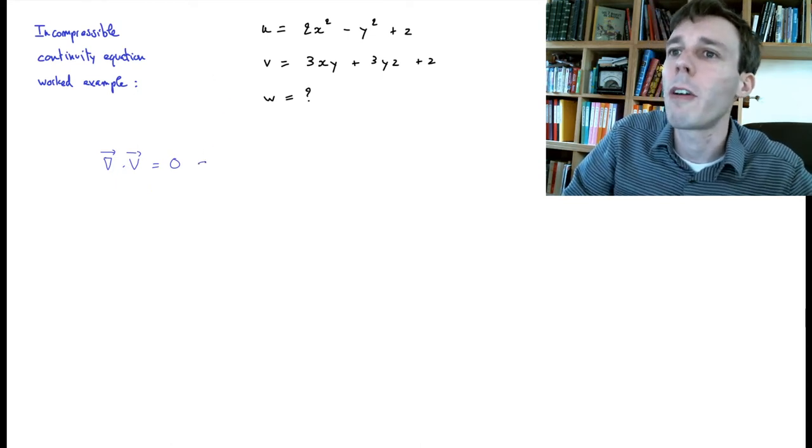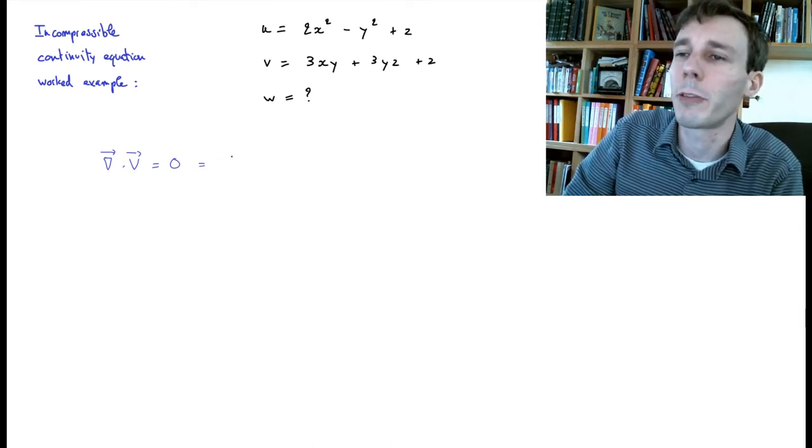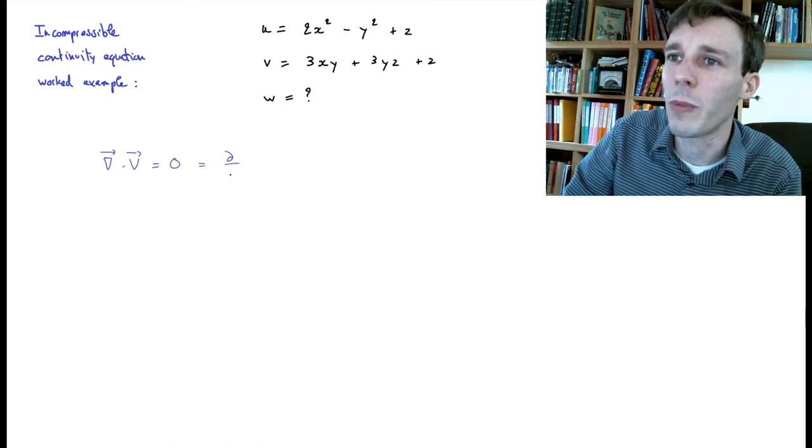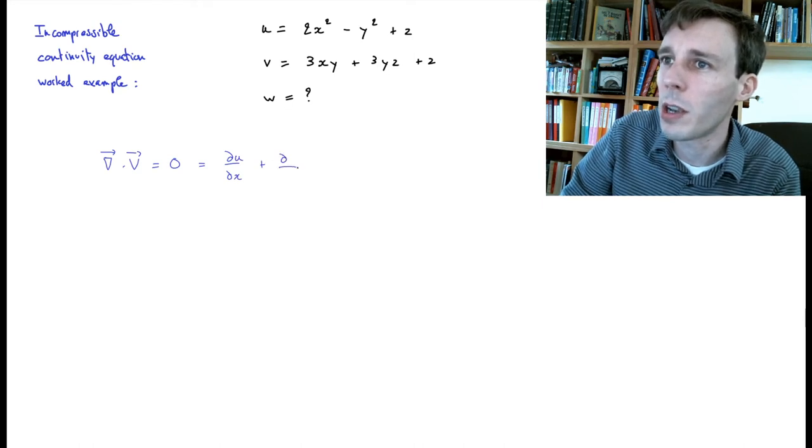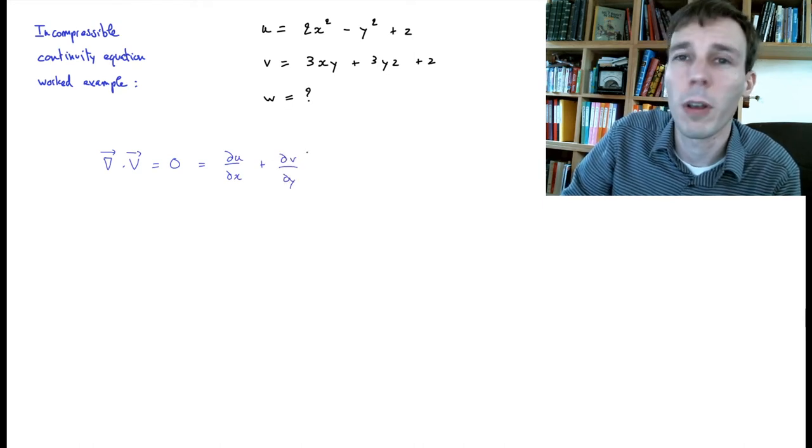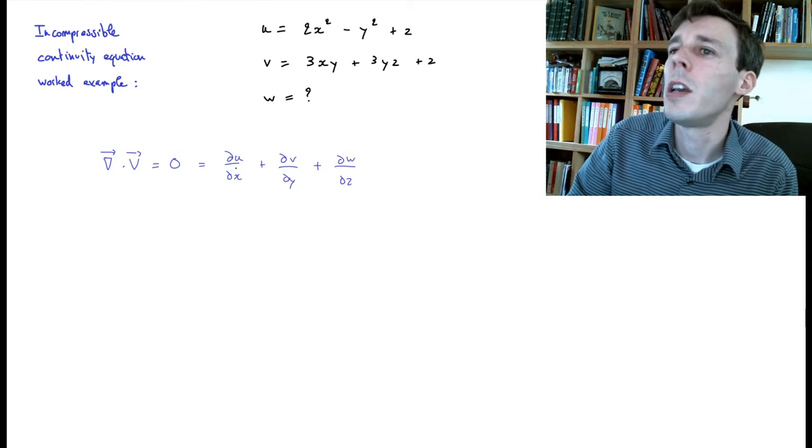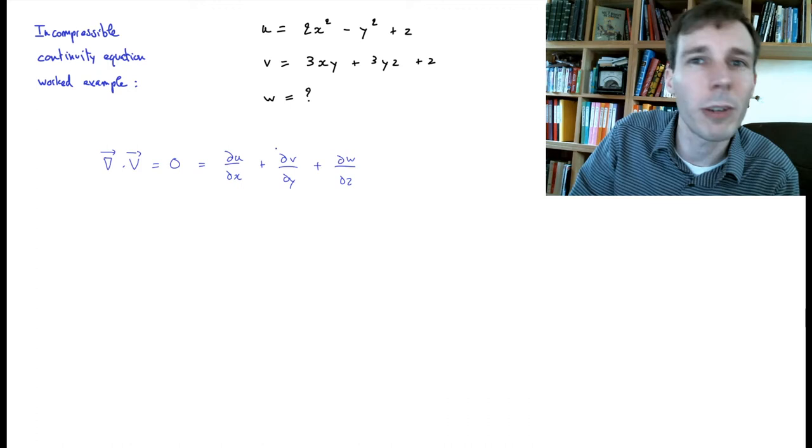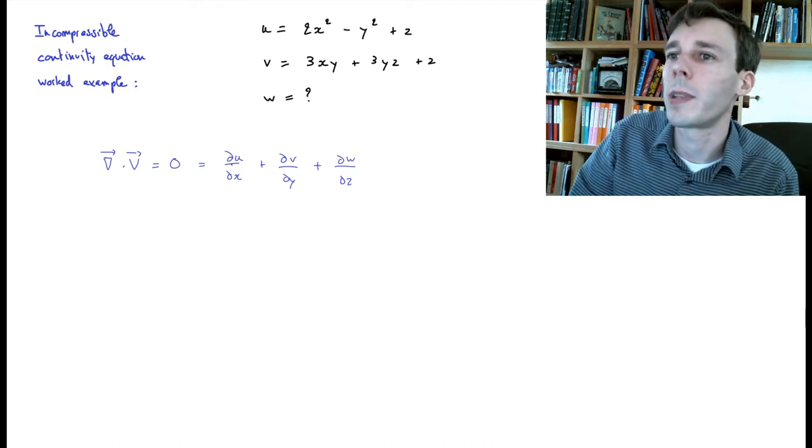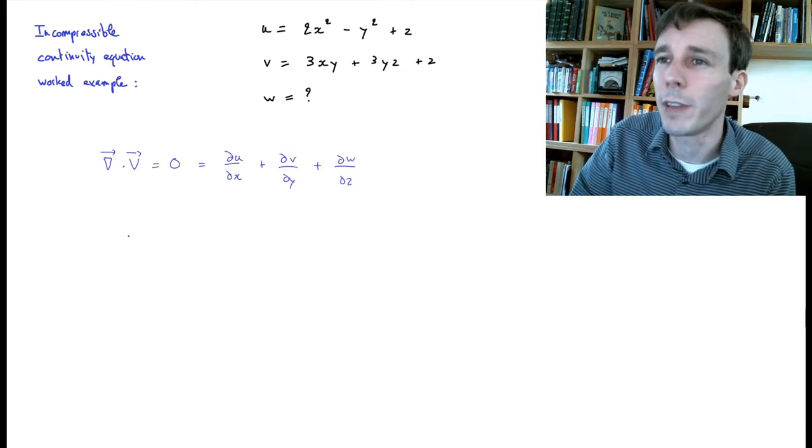Divergence of velocity is a very funky way of writing something that's perhaps more easily understandable if you split it out. This is the change with respect to x of the x component of velocity plus the change with respect to y of the y component of velocity plus the change with respect to z of the z component of velocity. Note, this is a scalar - it's a sum of three values and this is done everywhere in space.